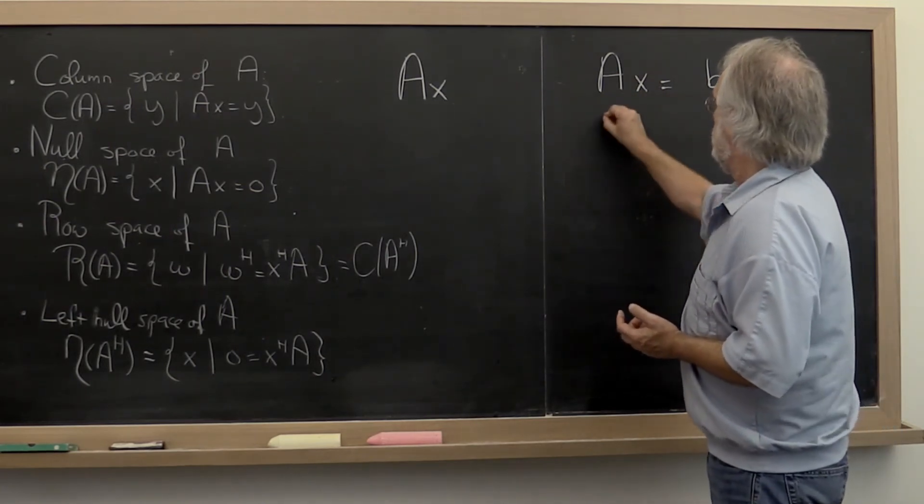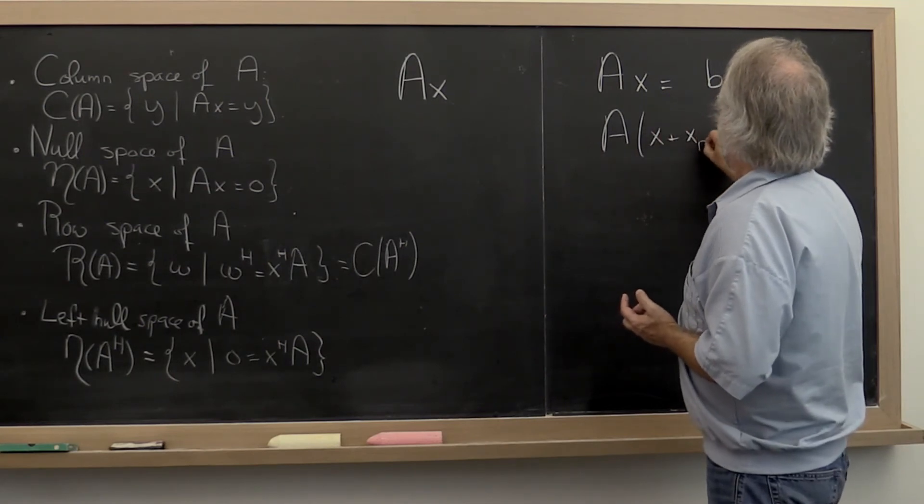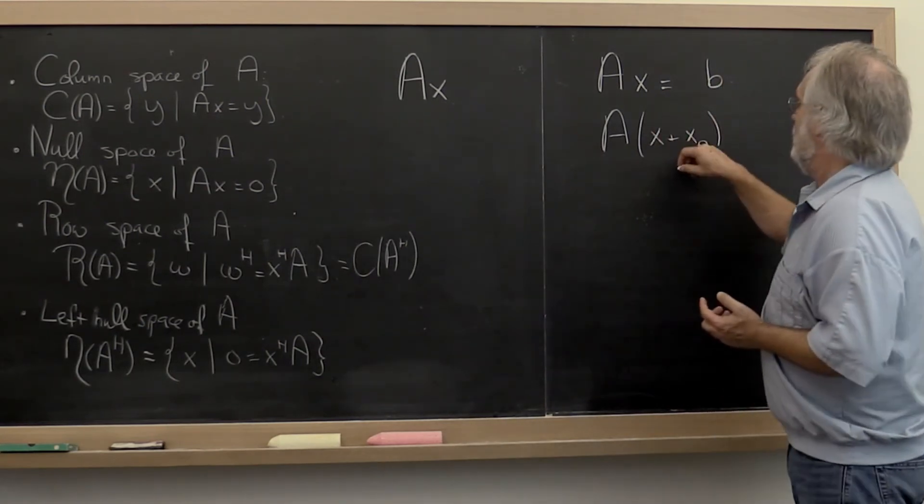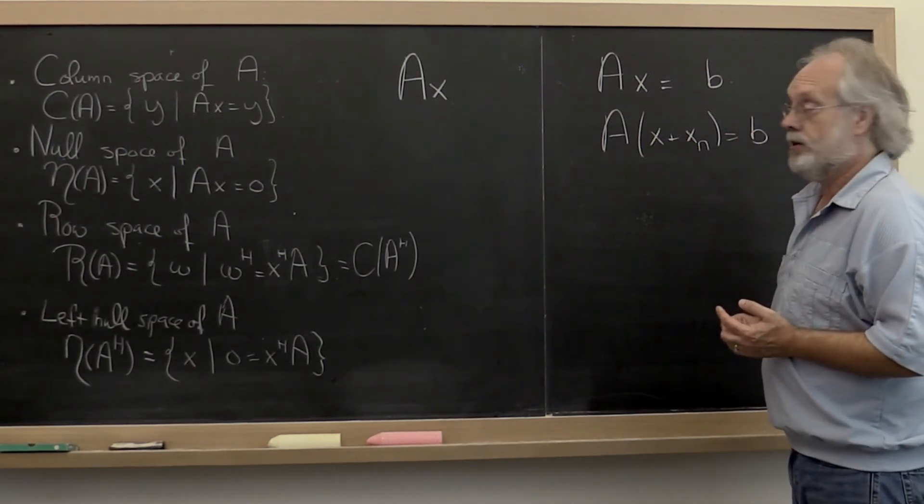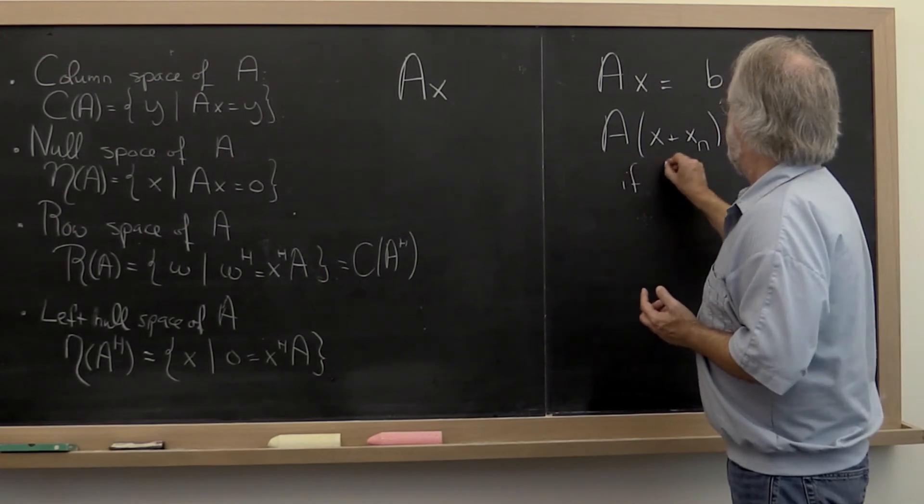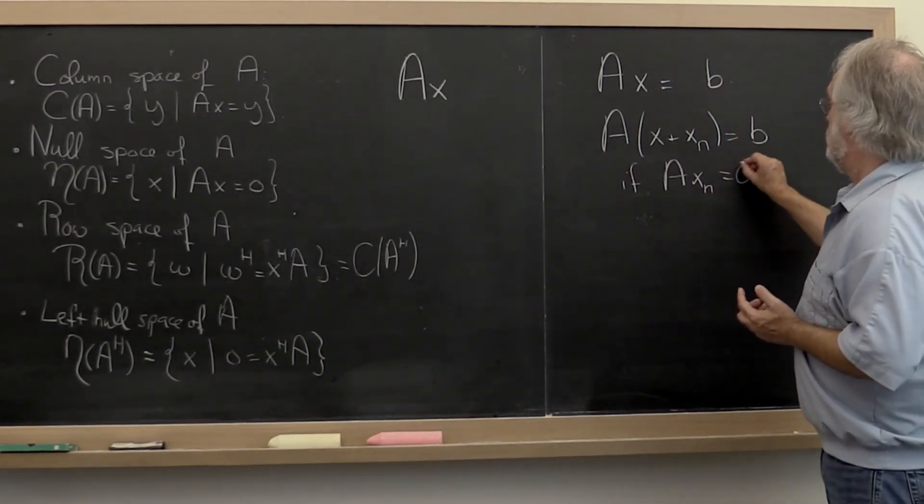If you find such a solution and then you add a vector in the null space of A to the solution x, then again you get B if A times the null space vector is equal to zero.